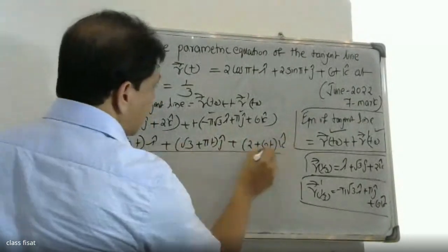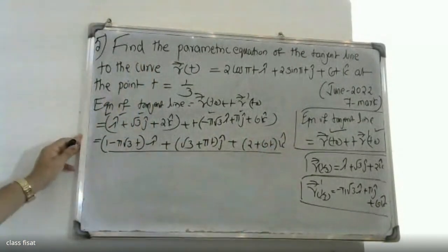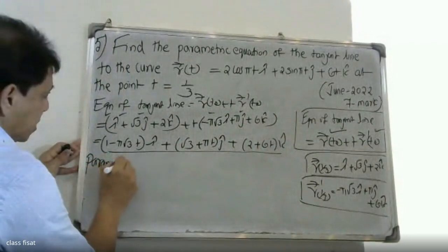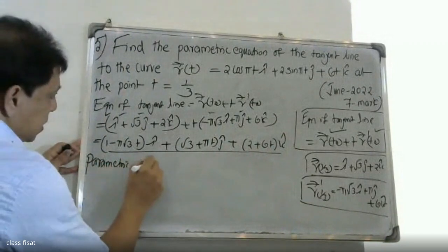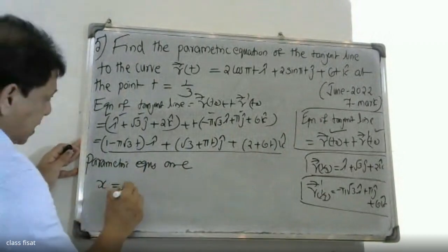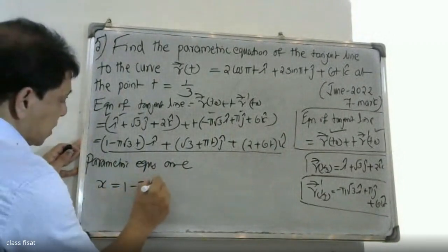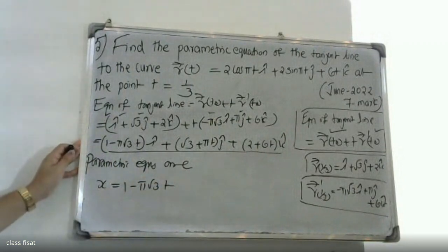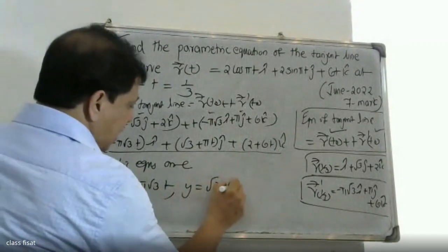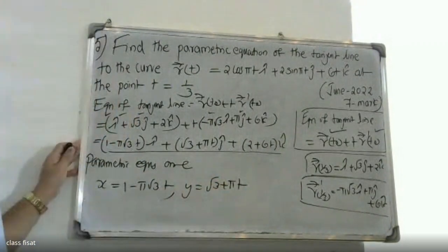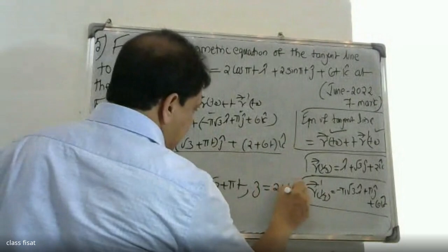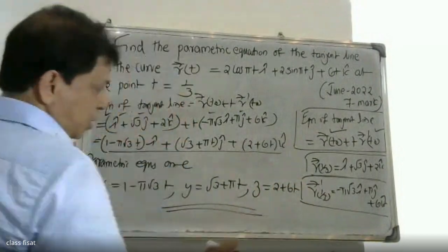This is the equation of the tangent line. Now put it in parametric form. Therefore the parametric equations are: x = 1 - 5√3·t, y = √3 + 5t, z = 2 + 6t. This is the parametric equation.